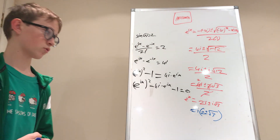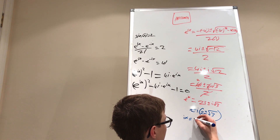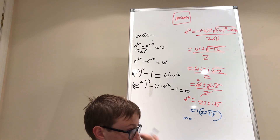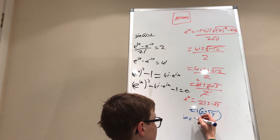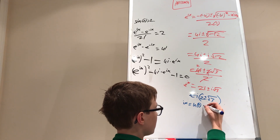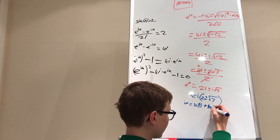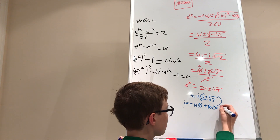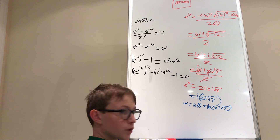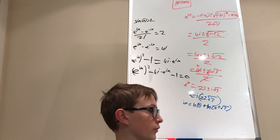Now we can take the natural log of both sides. ix = ln(i(2 ± √3)). Using the logarithm product rule, this becomes ix = ln(i) + ln(2 ± √3). So now we just need to solve for ln(i), and this is why the result technically has an infinite number of solutions.